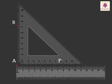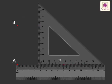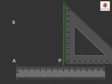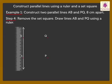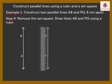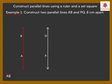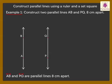Step 3: Slide the Set Square further along the Ruler till its vertical edge is on P. Plot point Q along the vertical edge of the Set Square. Step 4: Remove the Set Square. Draw Lines AB and PQ using a Ruler. Thus, Line AB and Line PQ are Parallel Lines 8 cm apart.